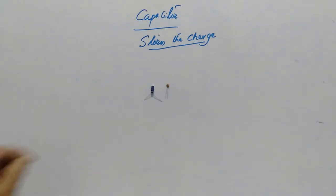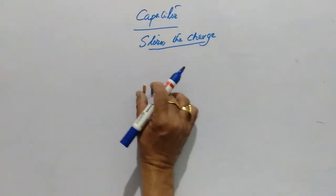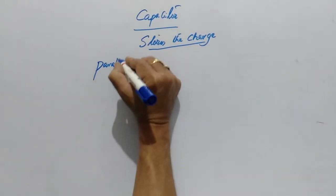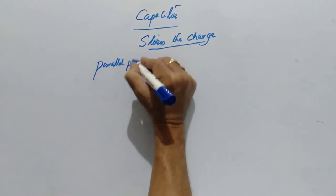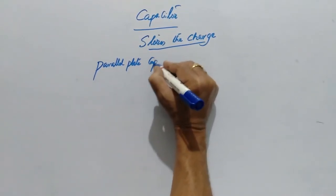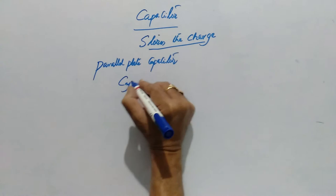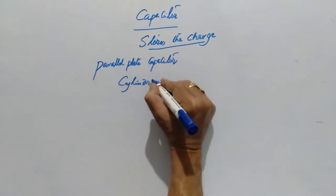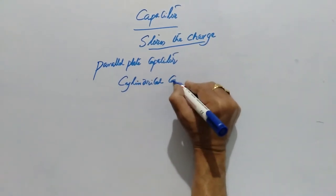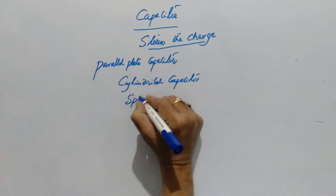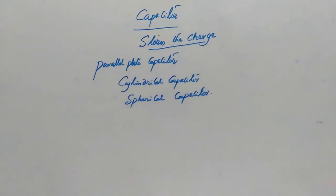Capacitors may be in different shapes: the parallel plate capacitors, the cylindrical capacitors, and spherical capacitors. In these three, we will talk about the parallel plate capacitor.